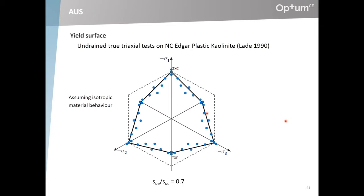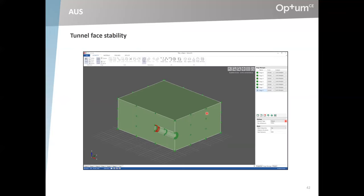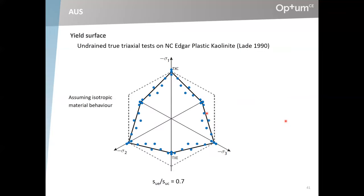You can look at true triaxial tests as well. This is true triaxial data from Ladd, who prepared samples that were isotropic — there's no reason to believe they were anything but isotropic. That's the first message I wanted to get through: for a perfectly ideal isotropic material, we should expect — and do find experimentally — a difference between the undrained shear strength in extension and compression. That is a really important point before we start talking about anisotropy.